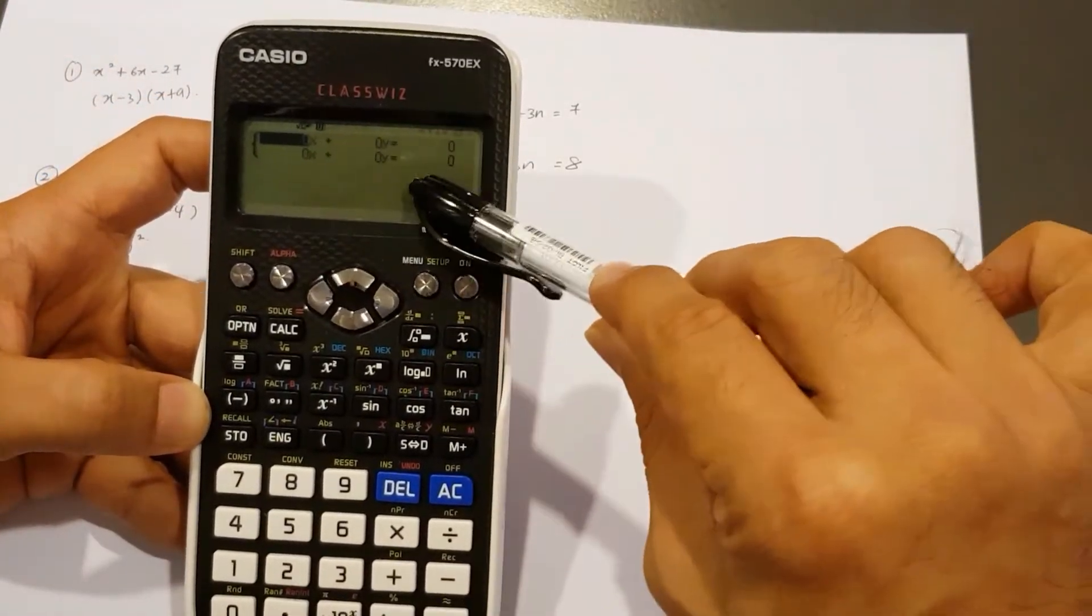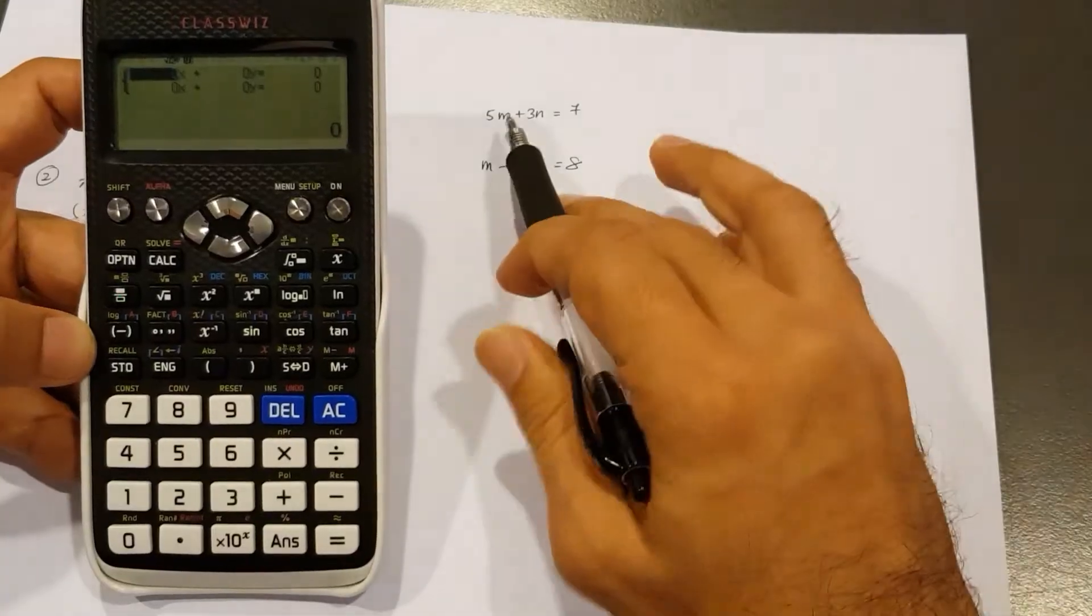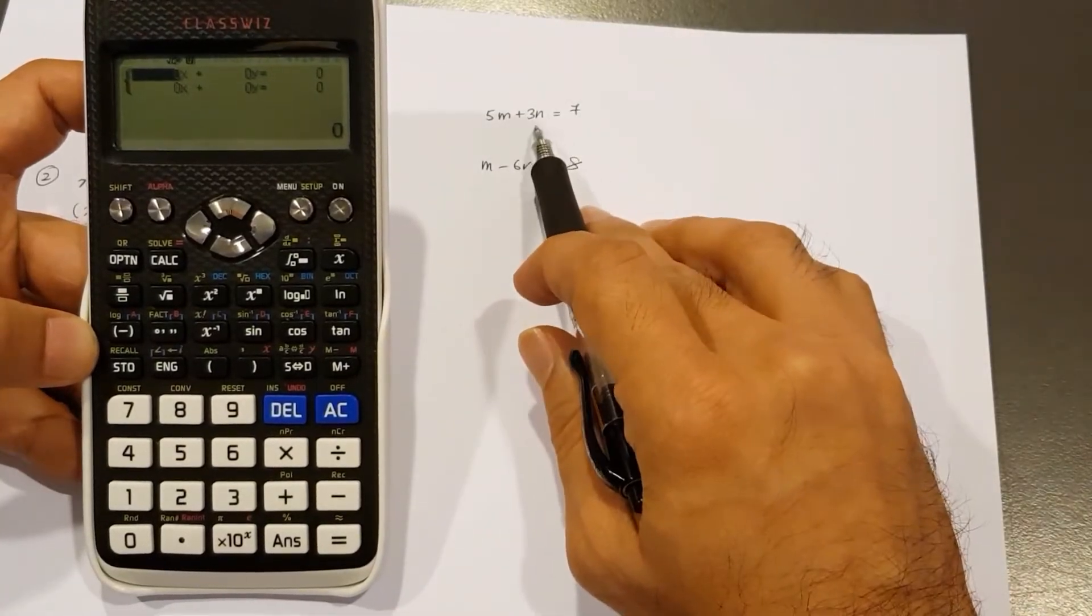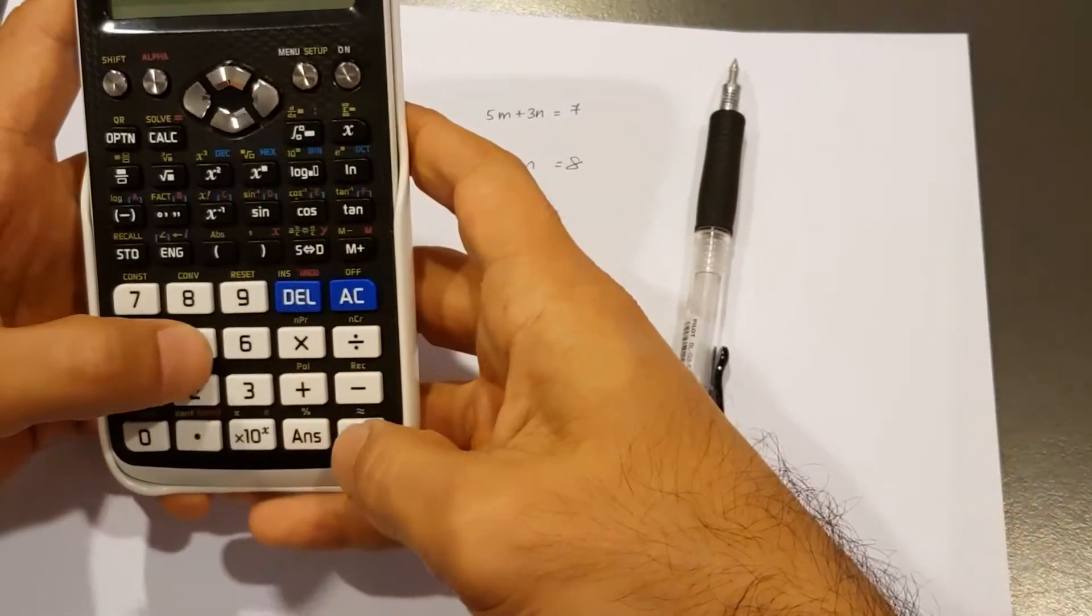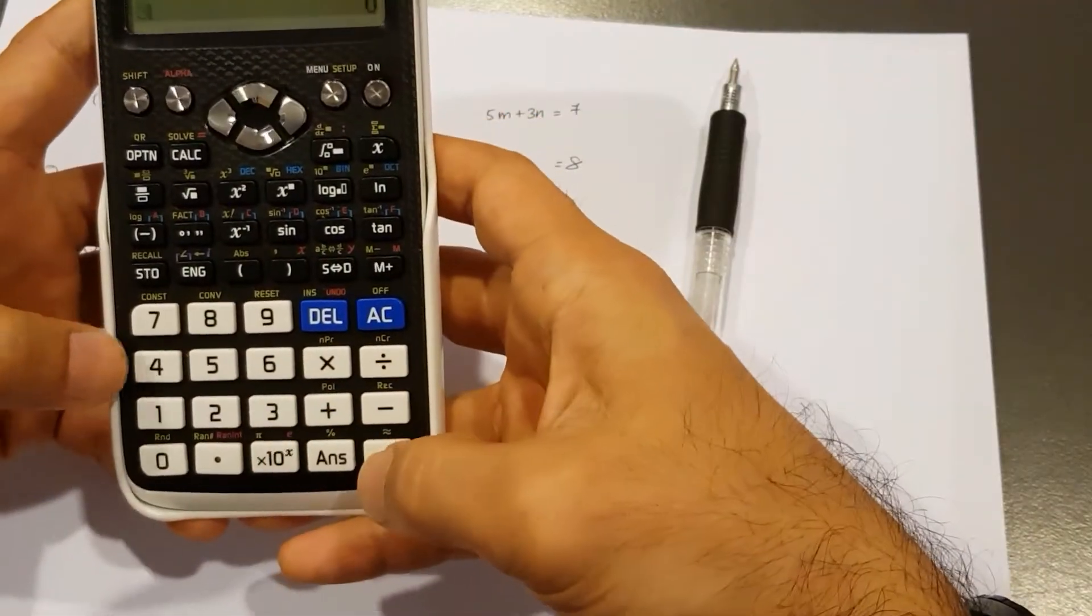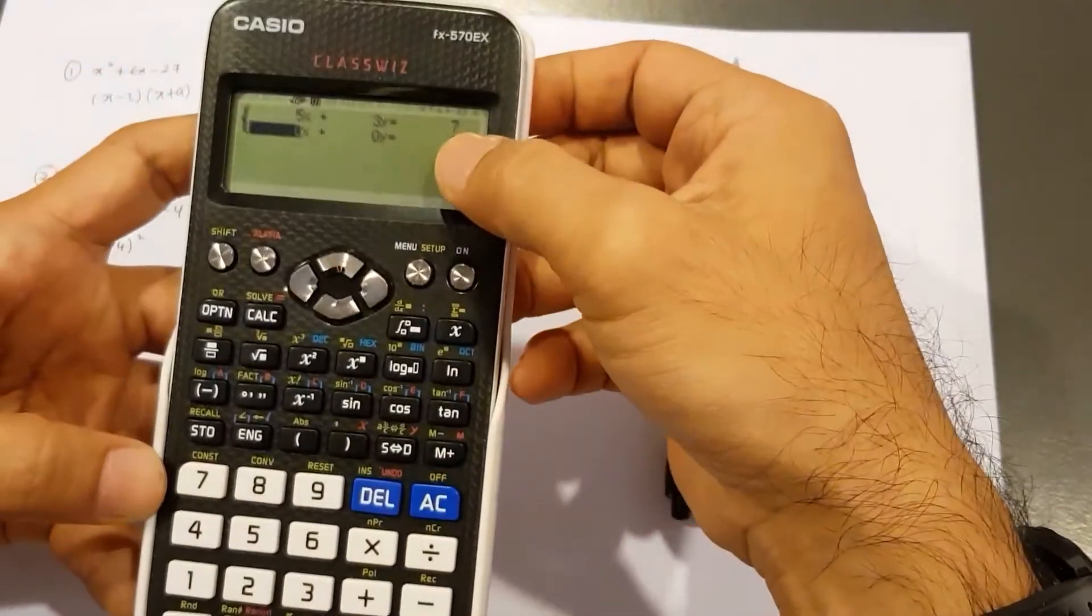Okay. So look, first row and second row. All right. So for the first row, I've got five, three, seven. So five equal three equal seven equal. Done. First row. Second row, I've got one negative six and eight.